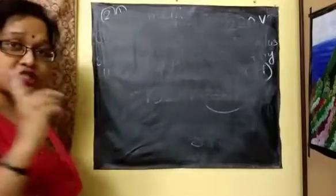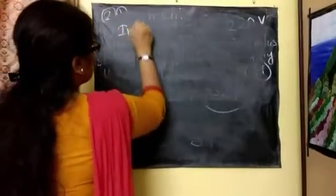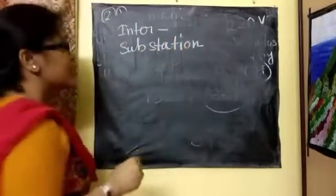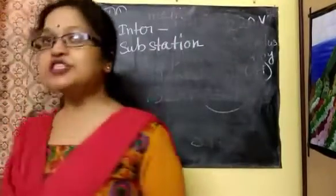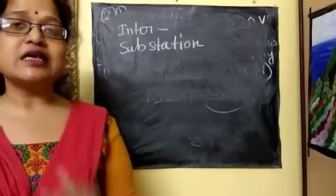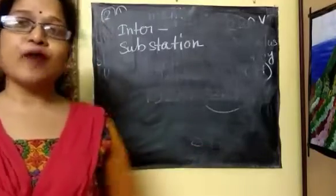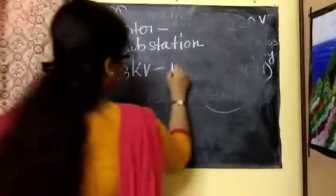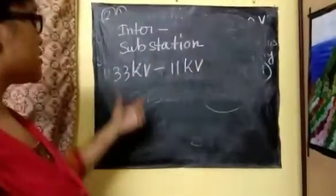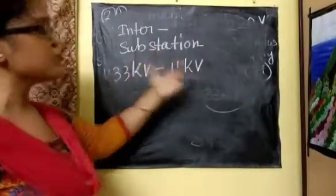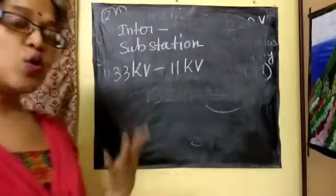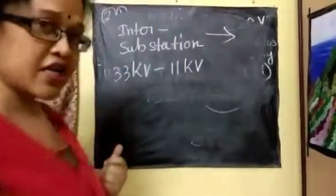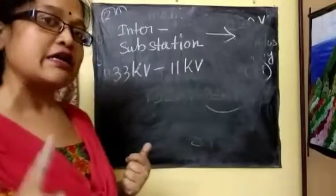The intermediate substation is the fourth part of this process. In the intermediate substation, there are a series of step-down transformers that convert 33 kilo volt to nearly 11 kilo volt. Light industries that need around 11 kilo volt of energy receive their power directly from the intermediate substation, not from the main substation.